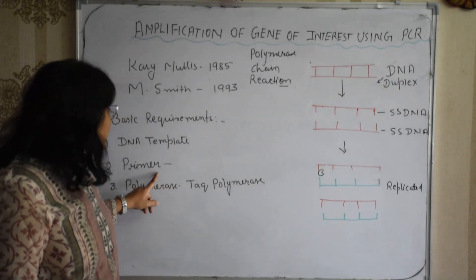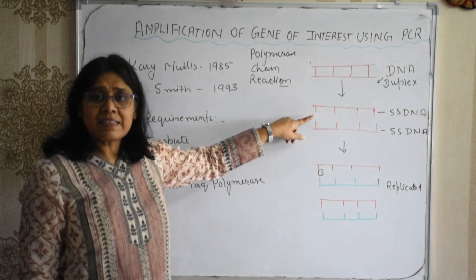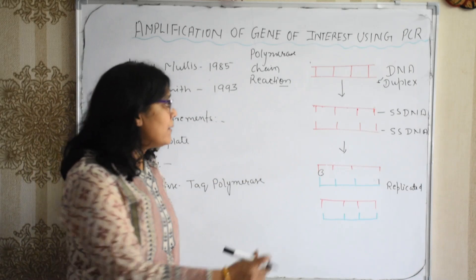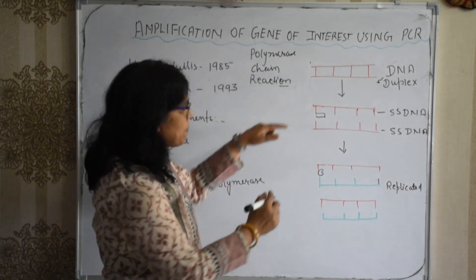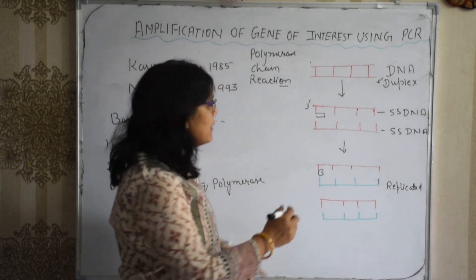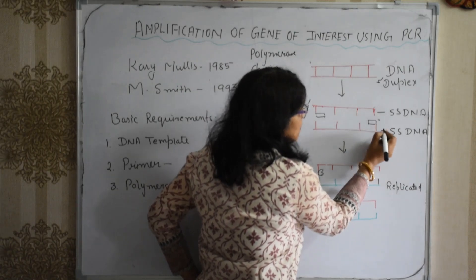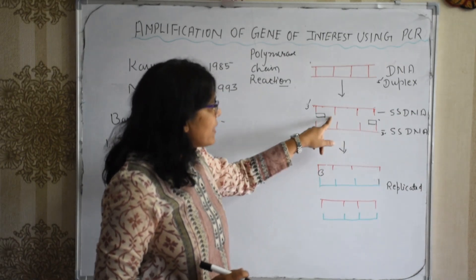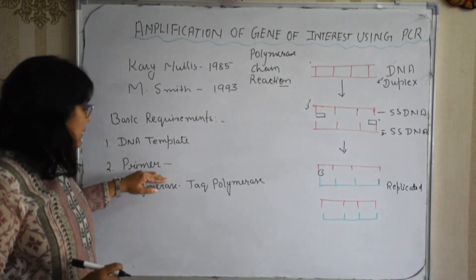The second basic requirement is the primer. The primer gets attached to each strand of the DNA duplex. One primer attaches to the three-prime end of one strand, and the other attaches to the three-prime end of the complementary strand, with their ends facing each other.